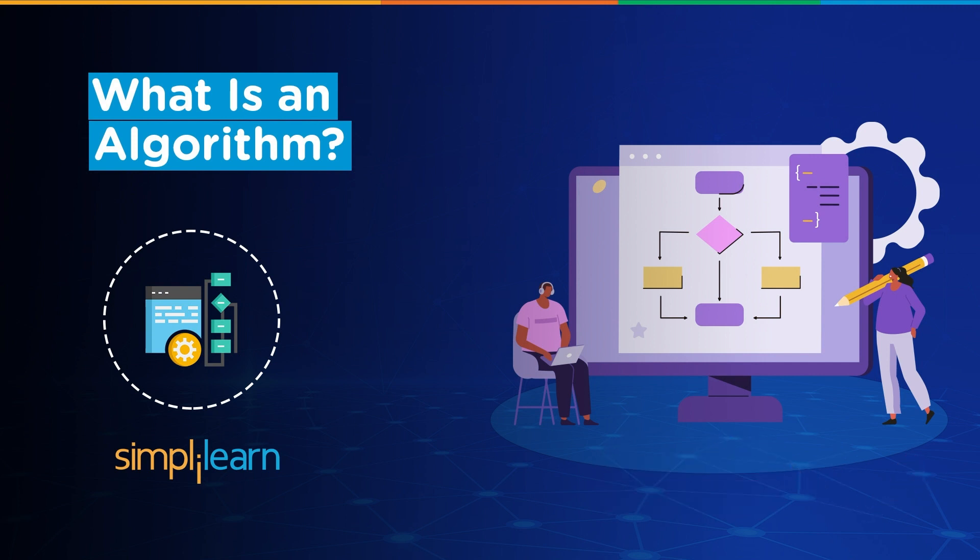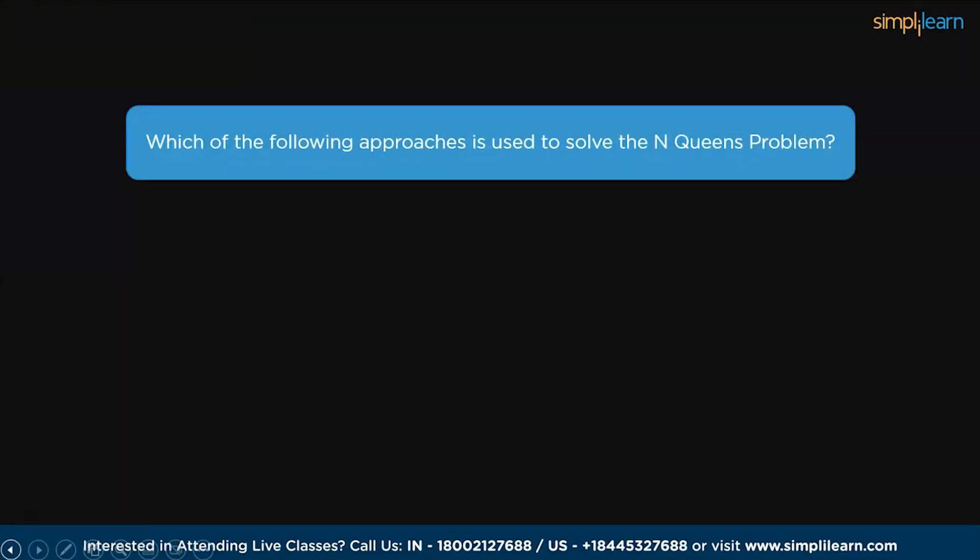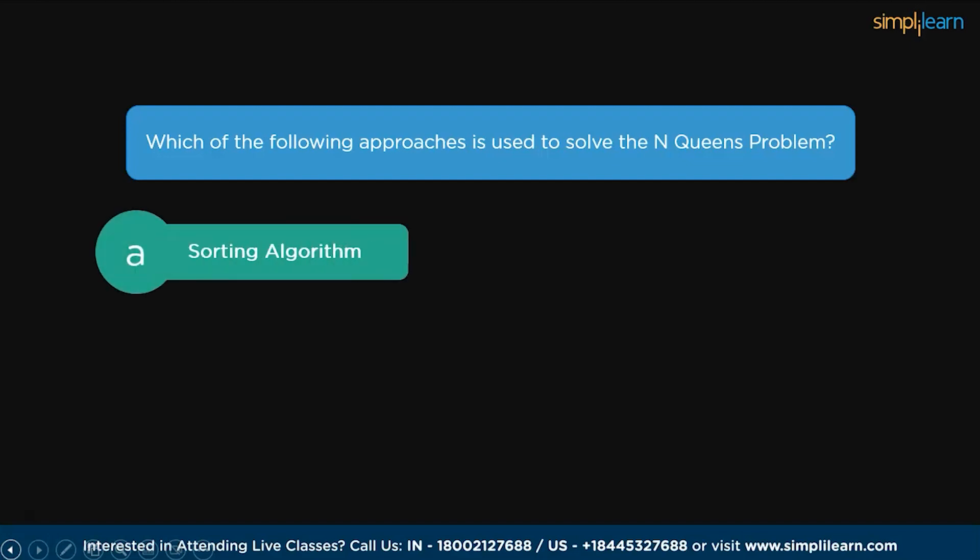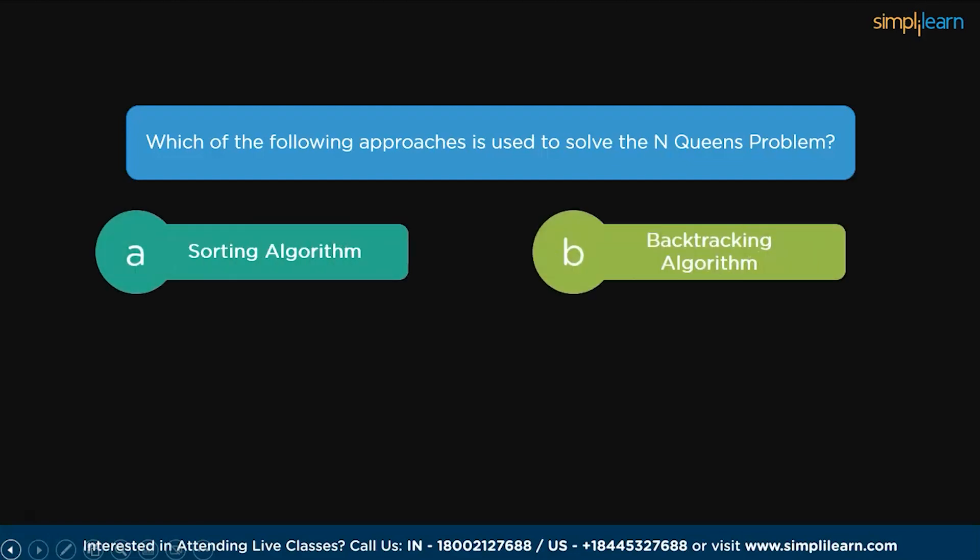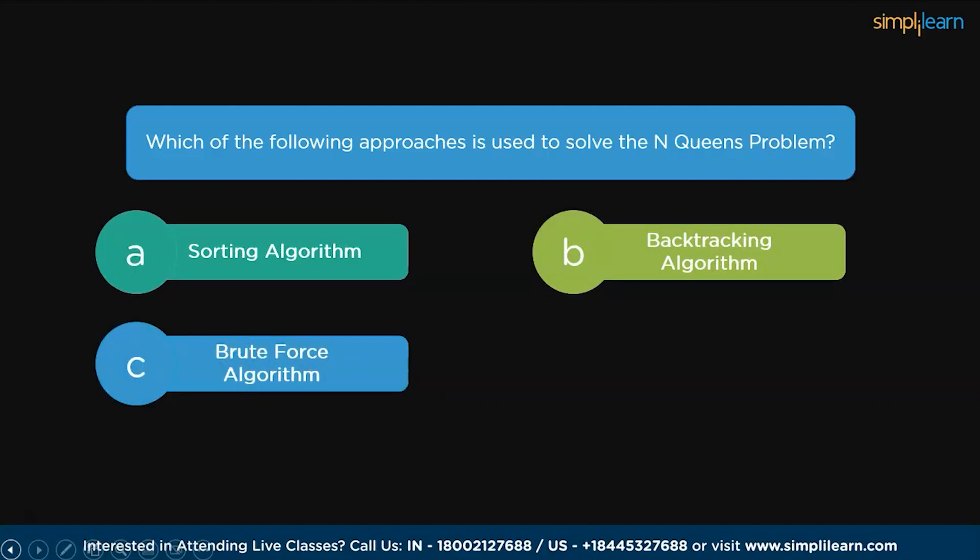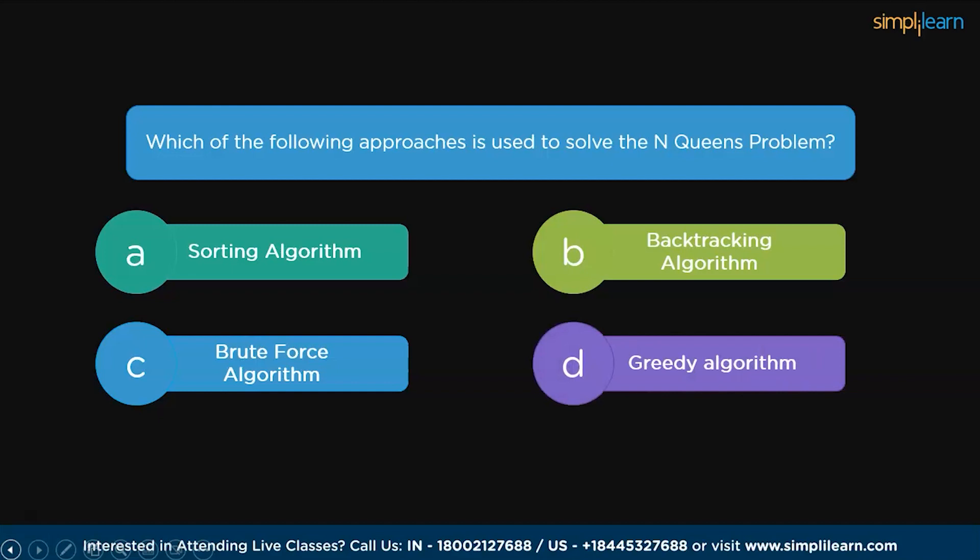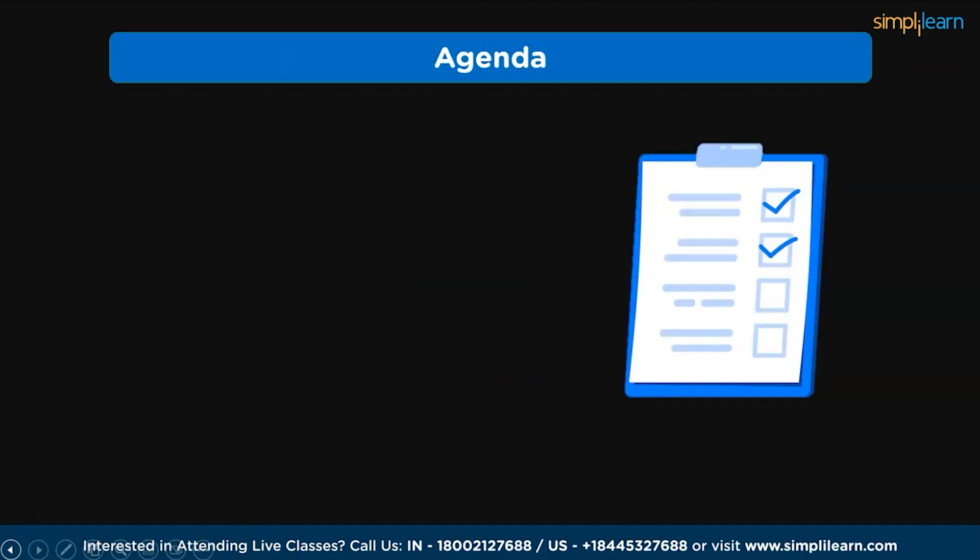But before we begin with the topic further, I have one simple question for you guys. Which of the following approaches is used to solve the NQS problem? The options are sorting algorithm, backtracking algorithm, brute force algorithm or greedy algorithm. If you know the answer, please leave them in the comments box below.